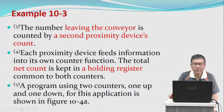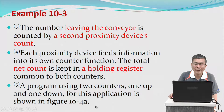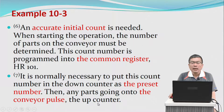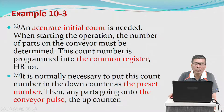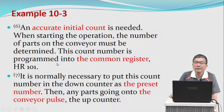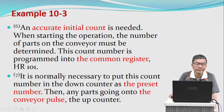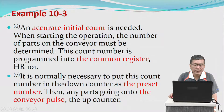A program using two counters — one up and one down — for this application is shown in figure 10.4a. An accurate initial count is needed when starting the operation; the number of parts on the conveyor must be determined. The count number is programmed into the common holding register 101.